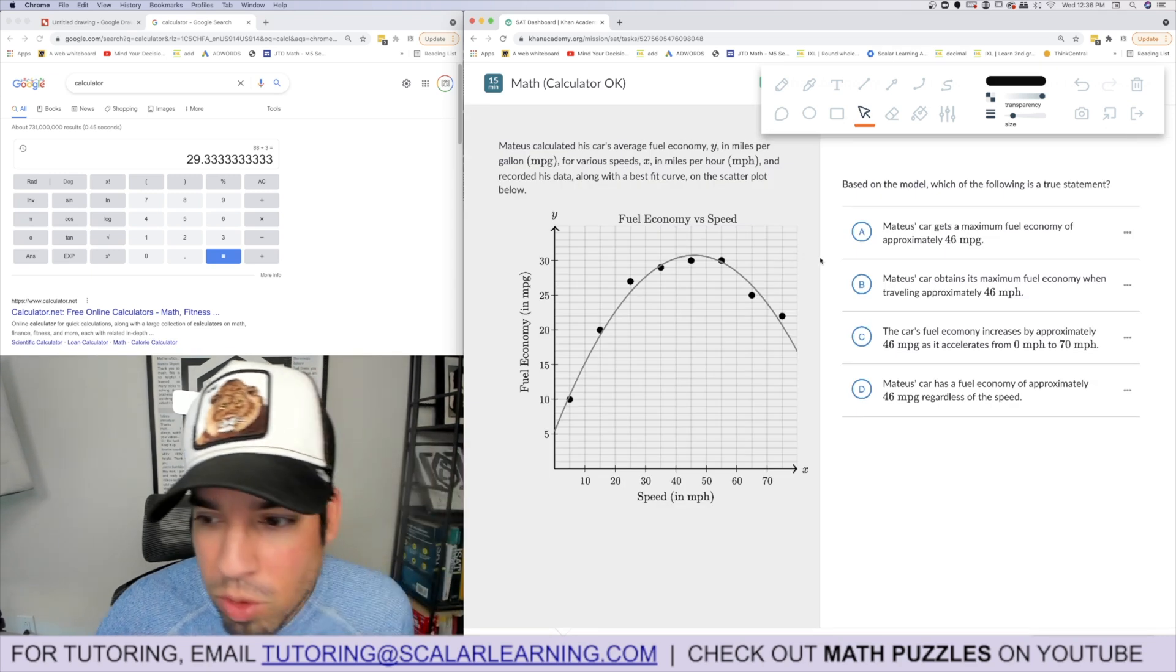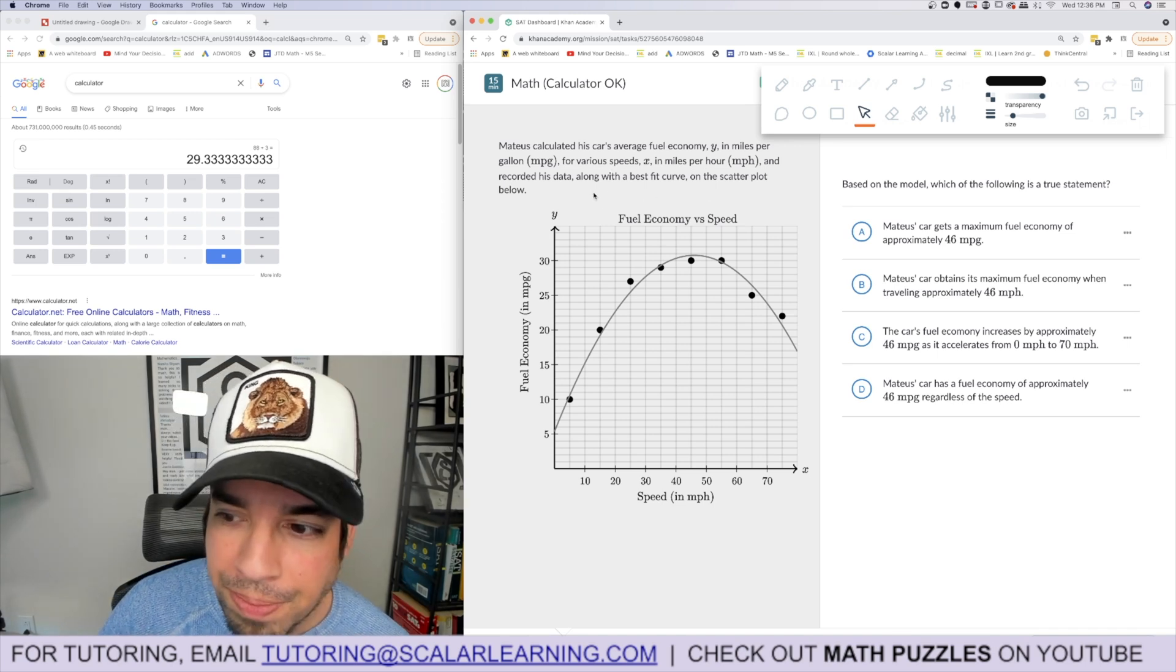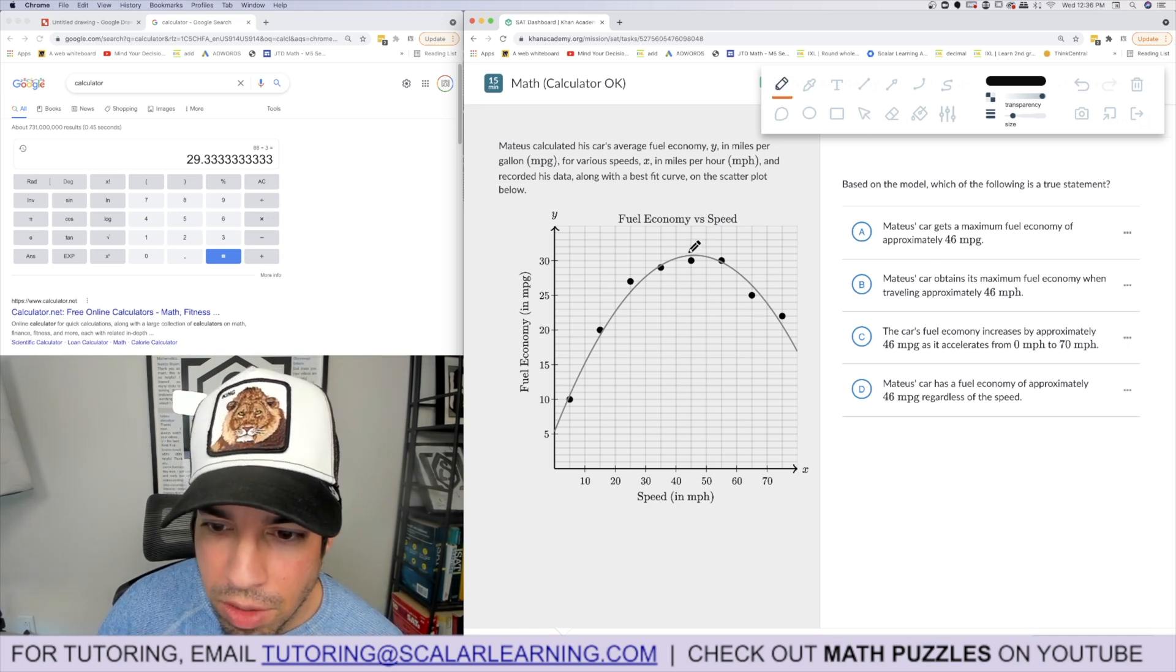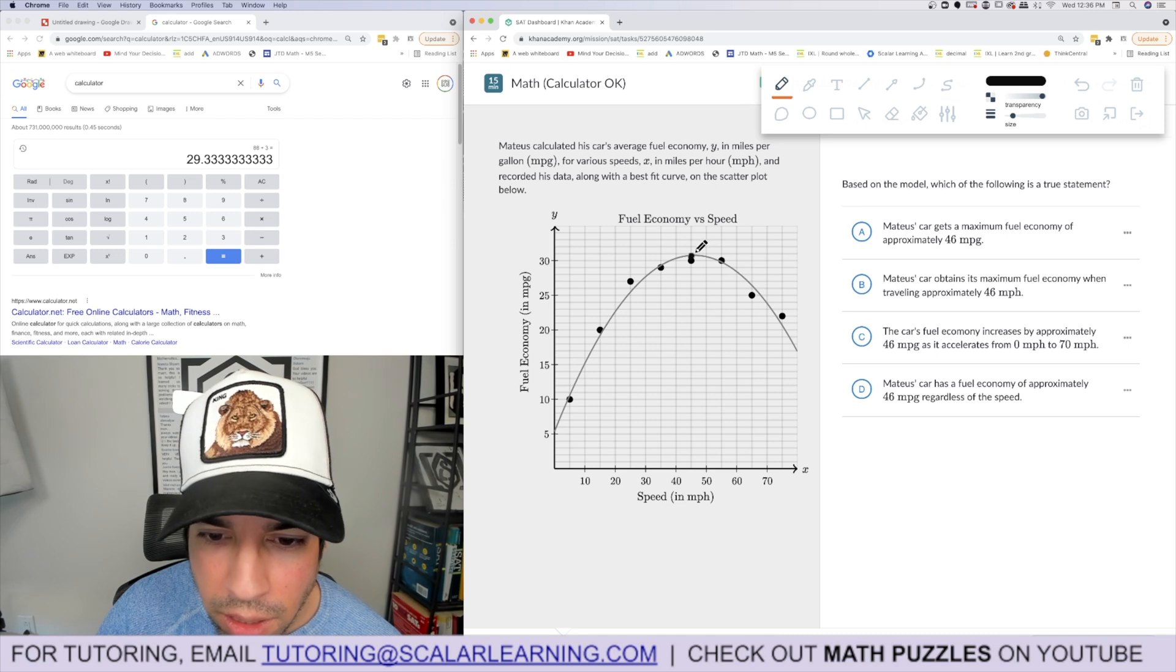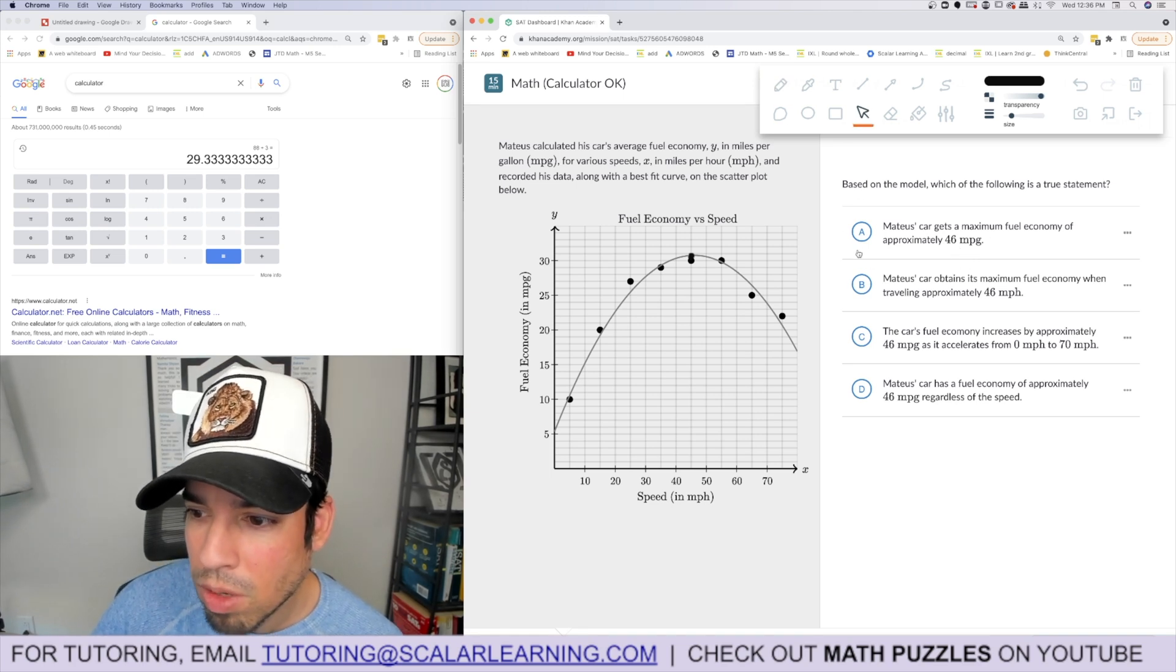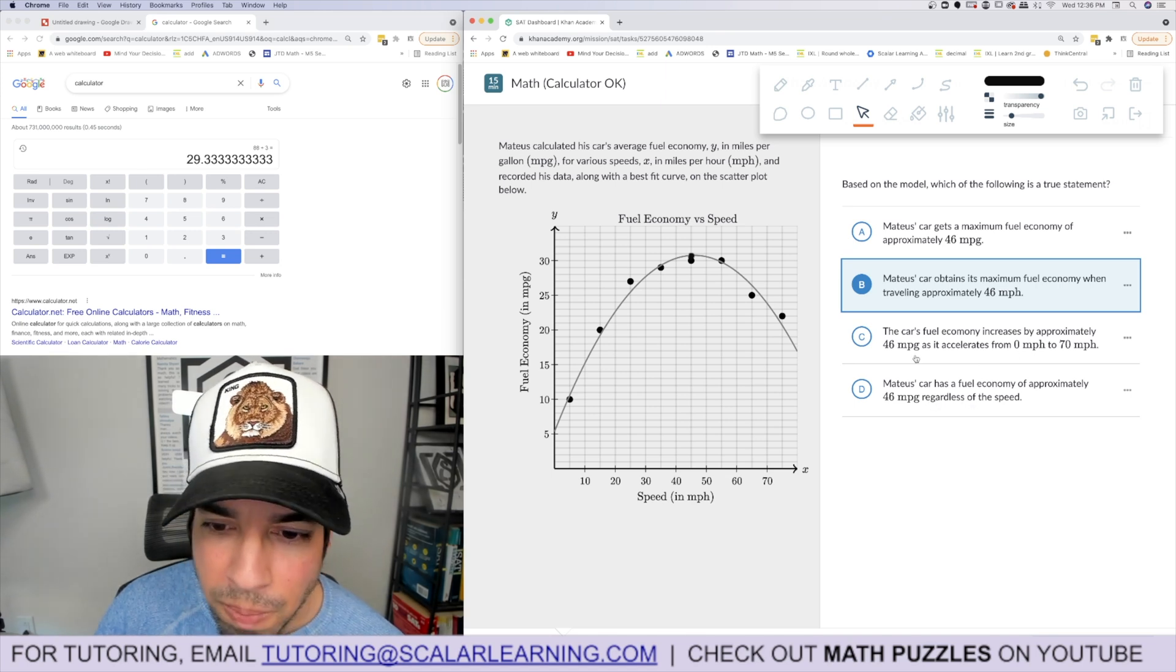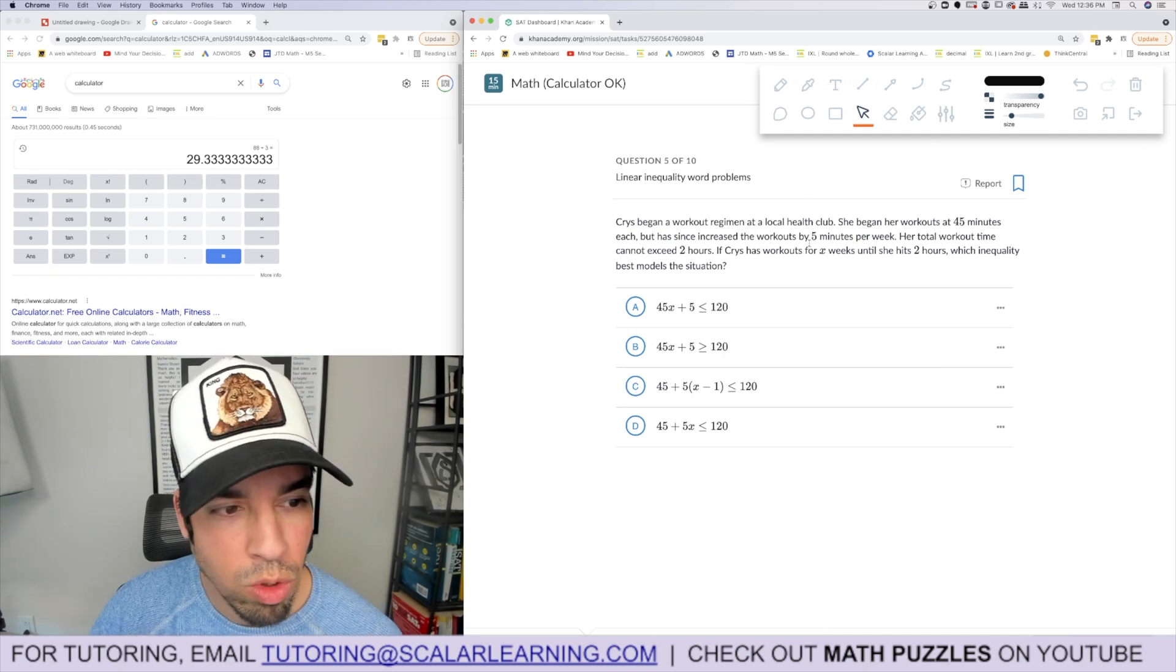Based on the model, which is the following is a true statement? Mateus calculated his car's average fuel economy at various speeds. His max fuel economy is here at about 45 miles per hour. Maximum fuel economy occurs at approximately 46 miles per hour. The other ones don't make sense. The maximum is 30 miles per gallon. It's just B.